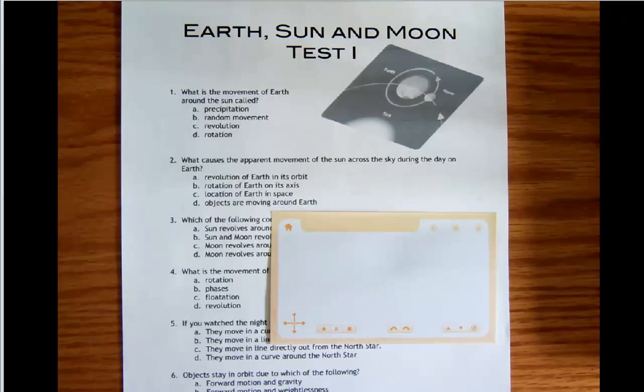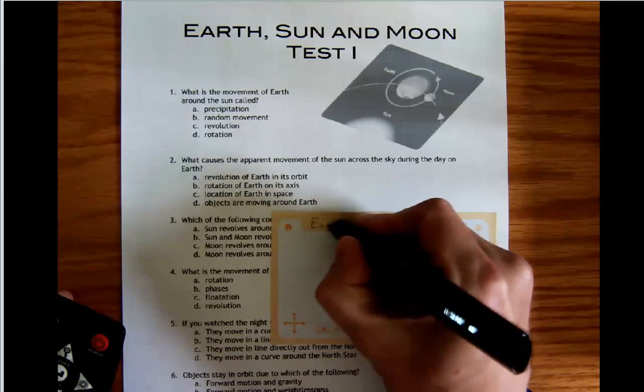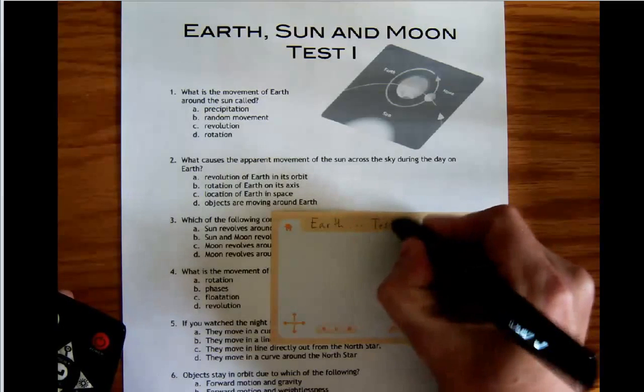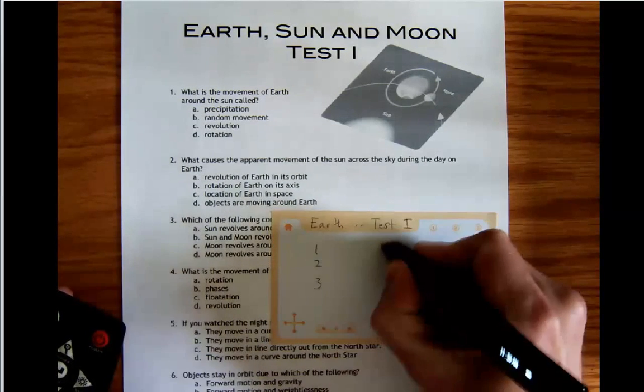The way we're going to do this is I'm going to take my Echo Smart Pen and write the name of the test on the top. It's the Earth, Sun and Moon test. Then I'm going to pre-write the numbers of the test, one through six.